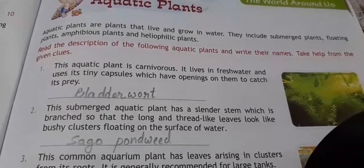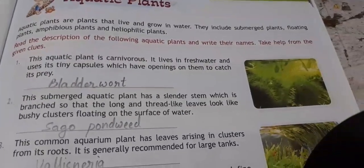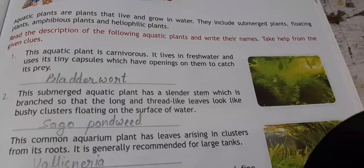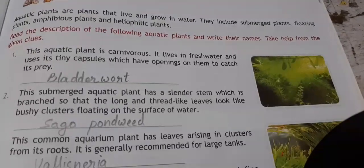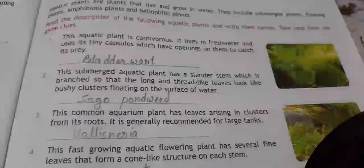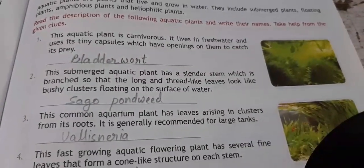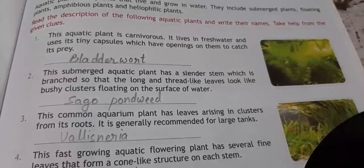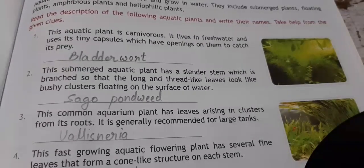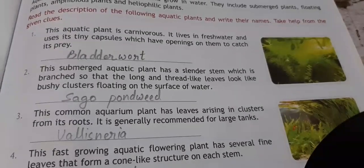The first one is a carnivorous aquatic plant. It lives in fresh water and uses its tiny capsule, which has openings on them, to catch its prey. We call it bladderwort. The second is a submerged aquatic plant with a slender, branched stem so that the long, thread-like leaves look like a bushy cluster floating on the surface of water — sago pondweed.